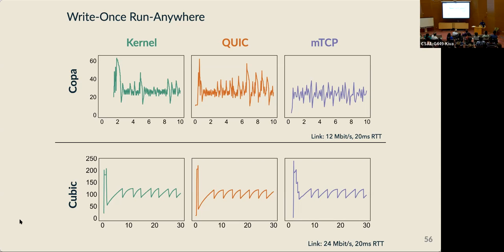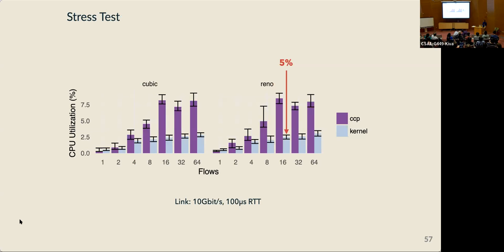We can actually get pretty good congestion control fidelity using this approach. For two algorithms — Copa, a relatively new delay-based congestion control algorithm first proposed at NSDI 2018, and cubic — the behavior of the same congestion control algorithm implementation is very similar across three data paths: Linux TCP, Chromium QUIC, and MTCP (a DPDK-based data path). The cubic sawtooth is very recognizable, and even the more complicated triangle pattern of Copa is also relatively recognizable across the top row graphs.